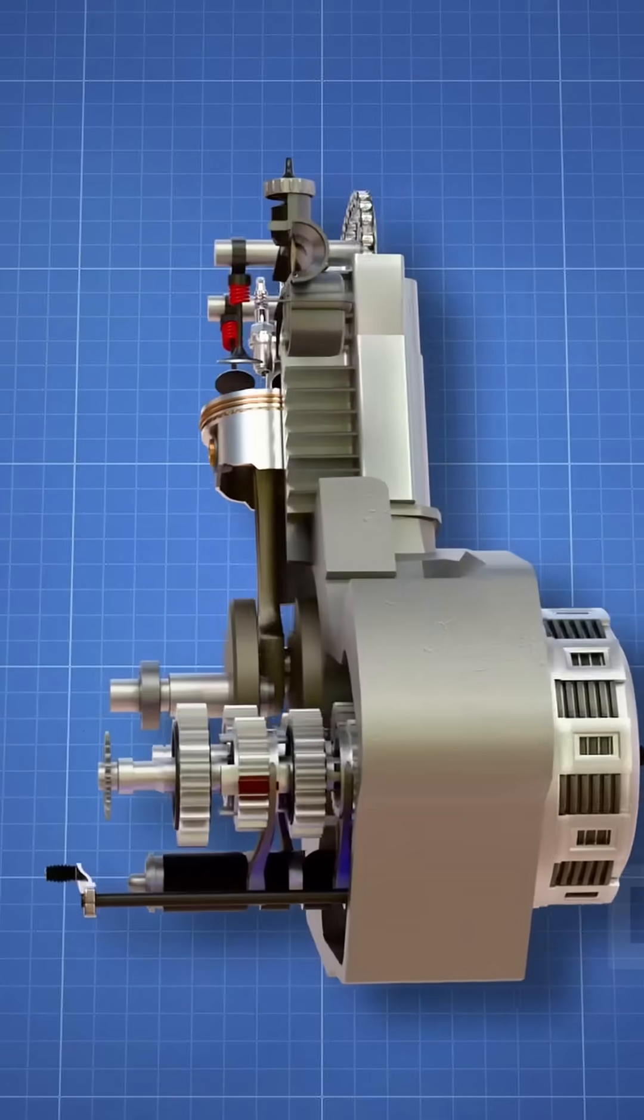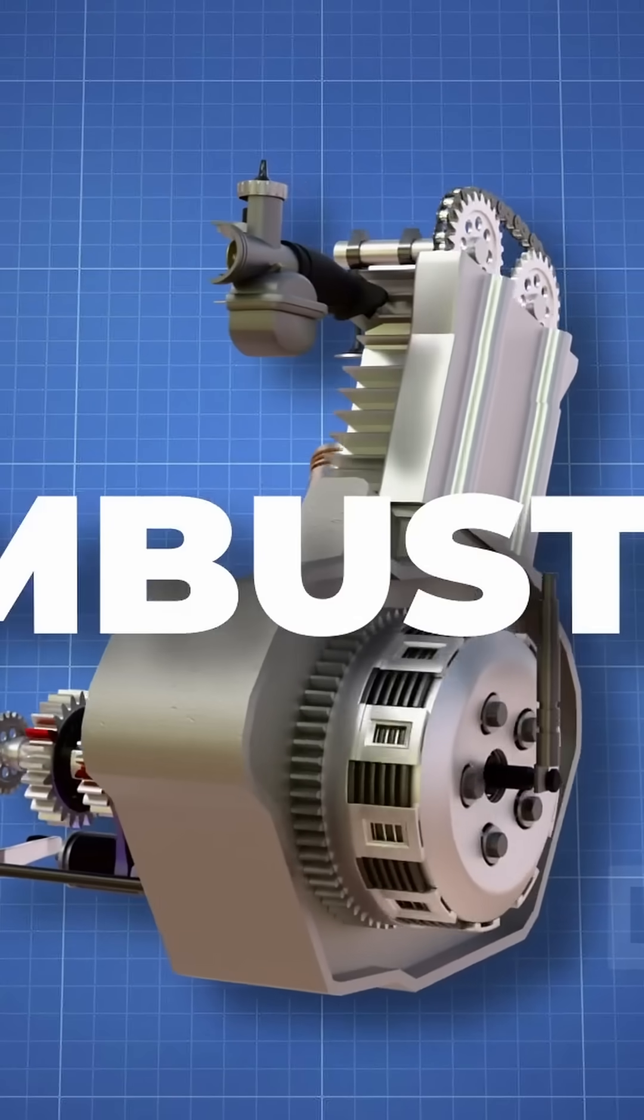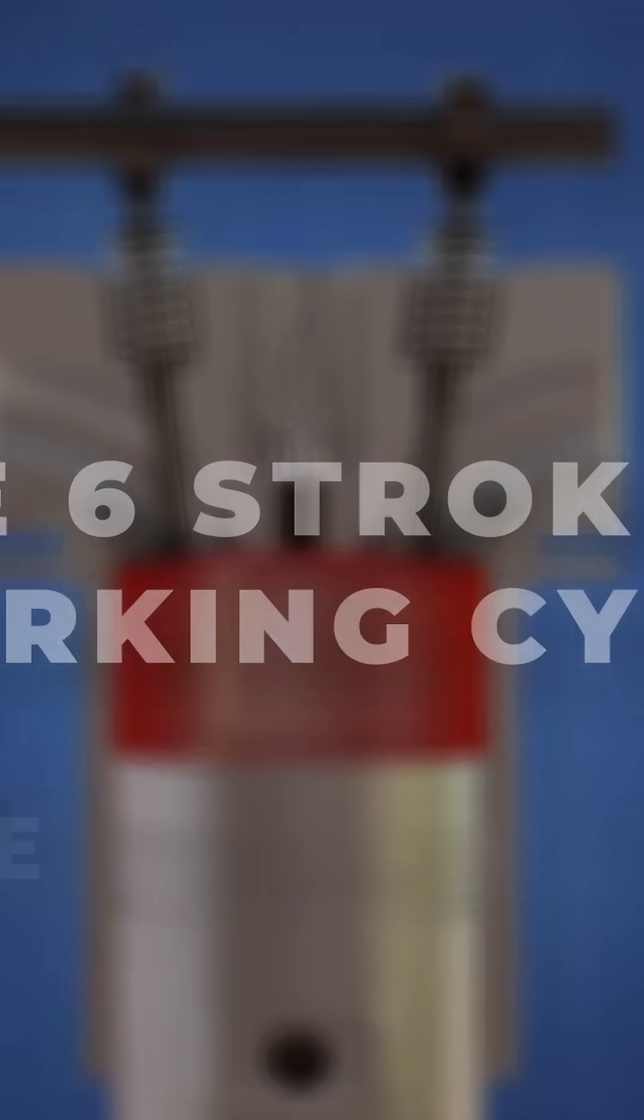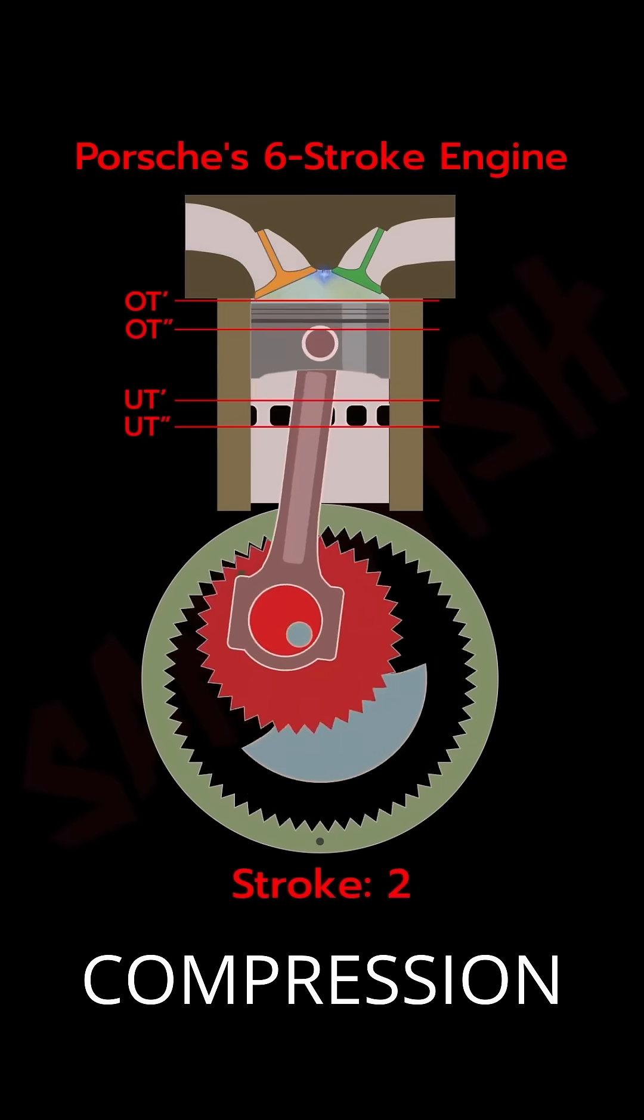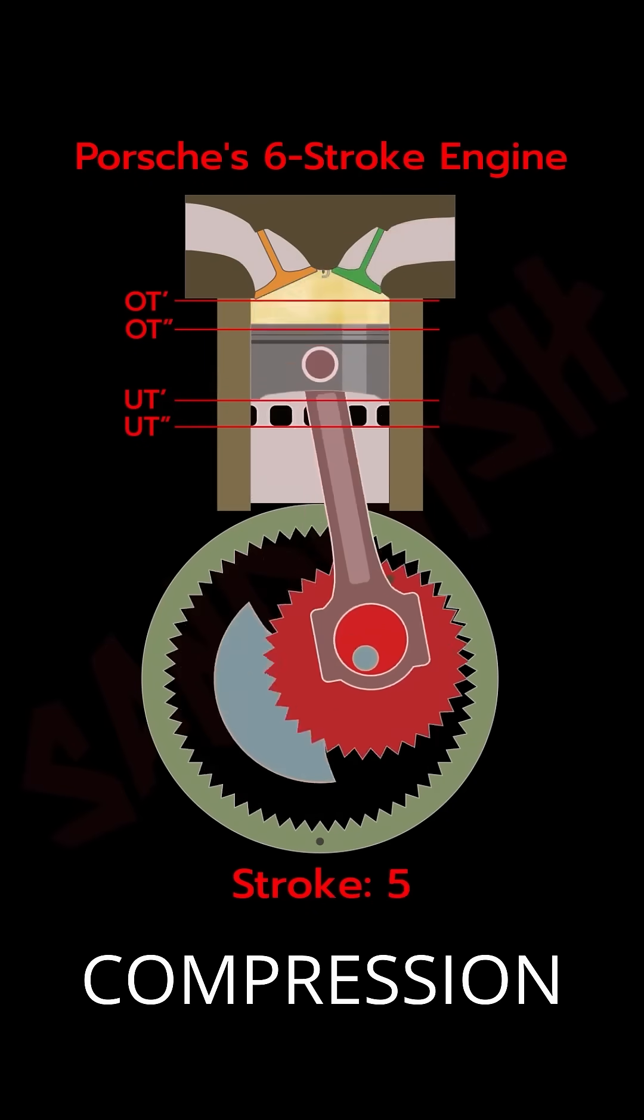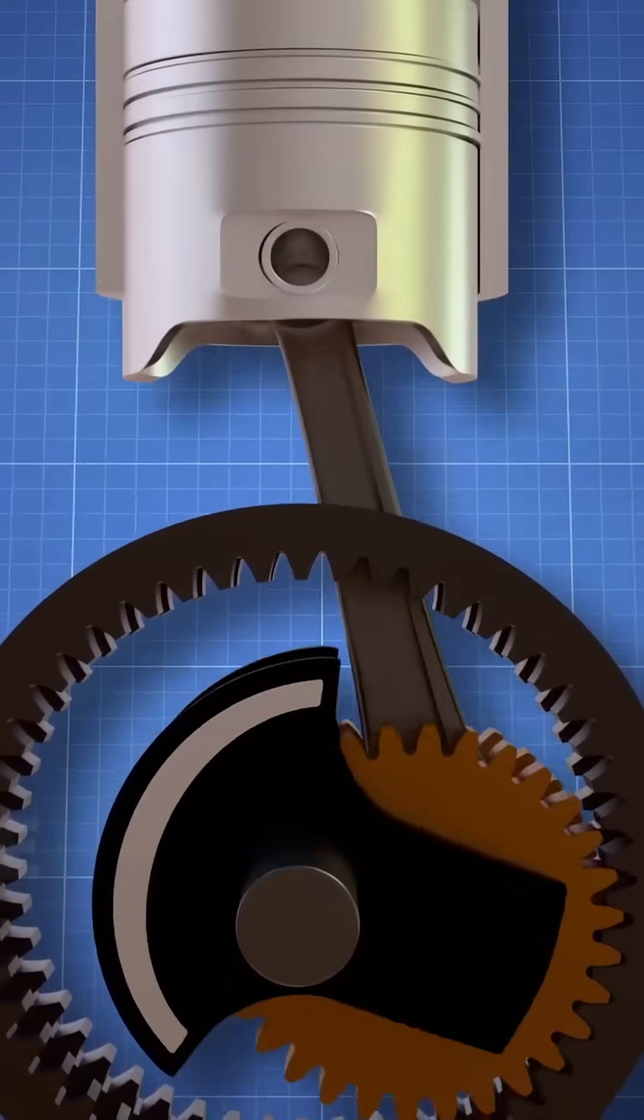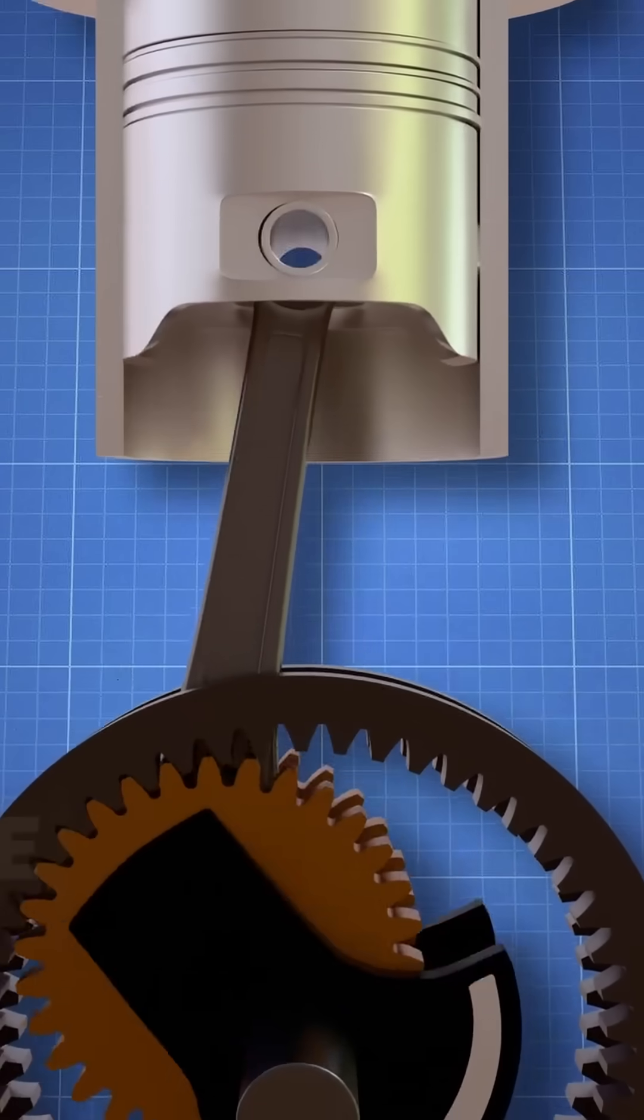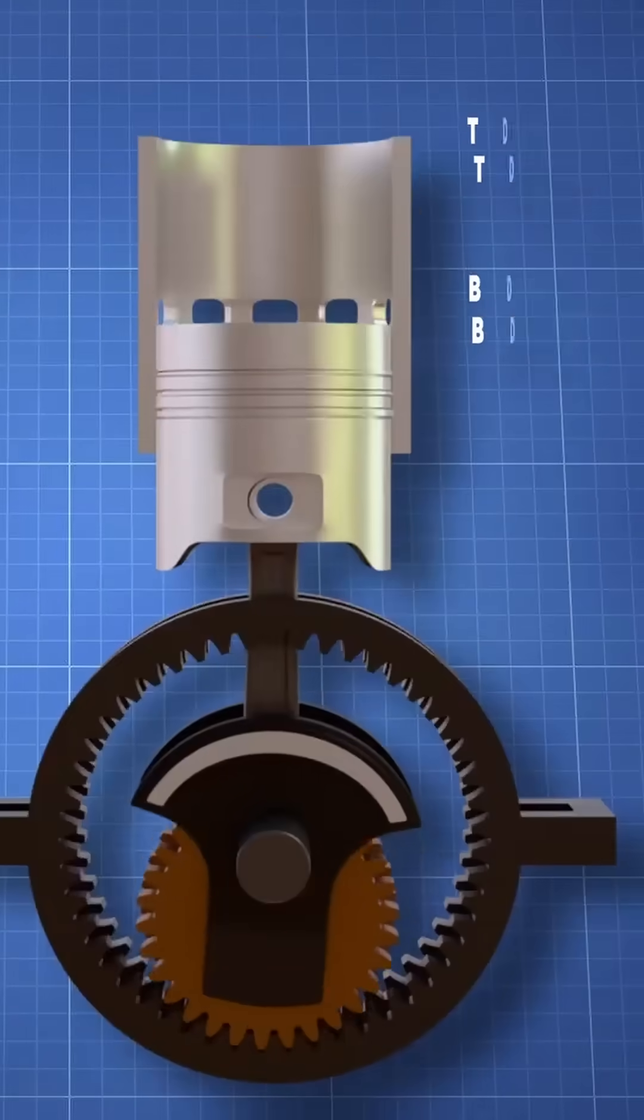Unlike regular engines which have intake, compression, power and exhaust strokes, the six-stroke engine has two more strokes in the middle and it goes like: intake, compression, power, compression, power and exhaust. This revolutionary engine has two top dead centers and two bottom dead centers.